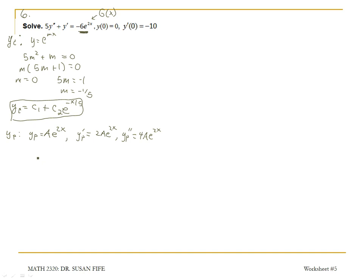When I substitute into this original differential equation using my particular solution, I want to end up with negative 6e to the 2x on the right side. I'm going to get 5 times my second derivative, that's 5 times 4a e to the 2x, plus yp prime, that's going to just be 2a e to the 2x, is equal to negative 6e to the 2x.